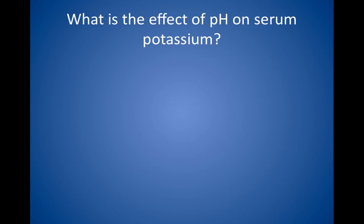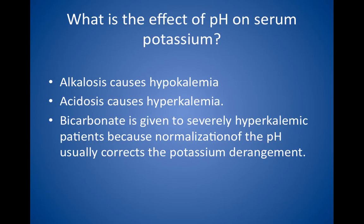What is the effect of pH on serum potassium? Changes in pH cause changes in serum potassium as a result of cellular shift. Alkalosis causes hypokalemia, whereas acidosis causes hyperkalemia. For this reason, bicarbonate is given to severely hyperkalemic patients. If the pH is deranged, normalization will most likely correct the potassium derangement automatically, without the need to give or restrict potassium.